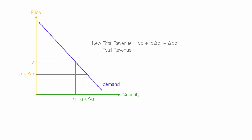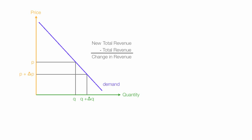My original total revenue was equal to quantity times price. So new total revenue minus total revenue is the change in revenue. The QP terms cancel out to zero, leaving quantity times change in price plus change in quantity times price as my change in revenue.